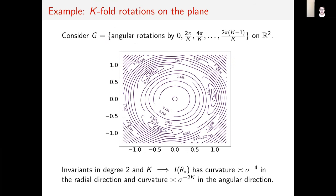To illustrate the result, let's consider an example of k-fold rotations on the plane. One can compute to find that the invariants are in degrees 2 and k, and therefore one realizes that the Fisher information I(θ*) has curvature ≍ σ^(-4) in the radial direction and curvature ≍ σ^(-2k) in the angular direction. This explains the oblong shape of the contours around the orbit of the unknown signal in the figure shown.